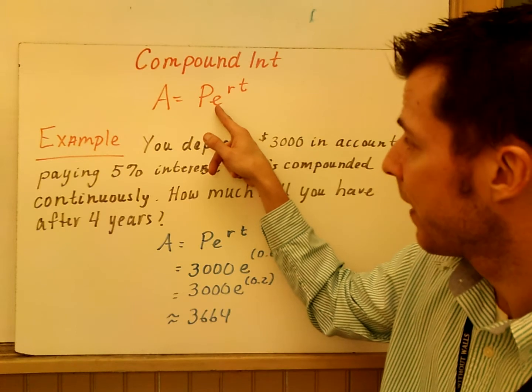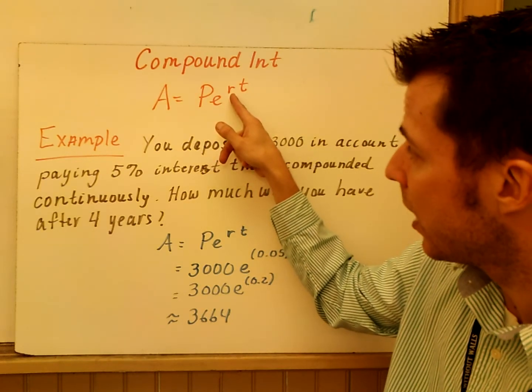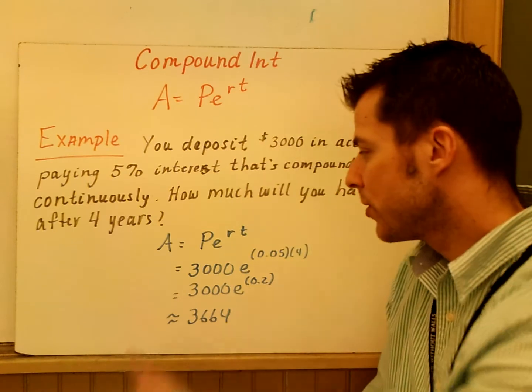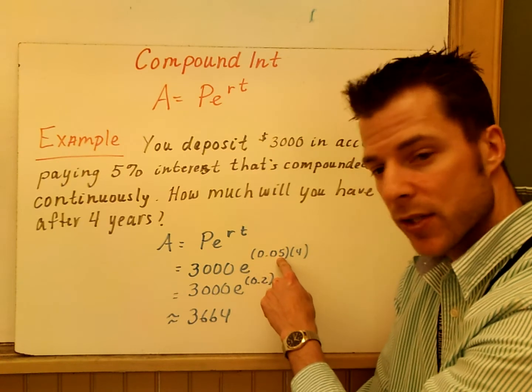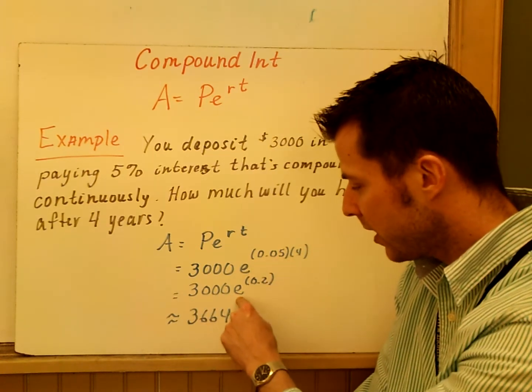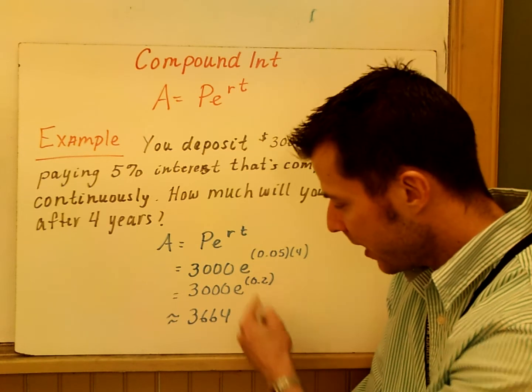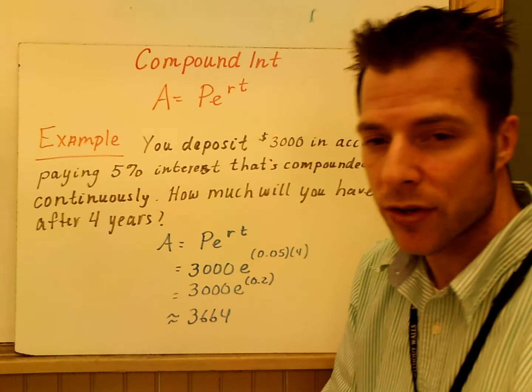R is the rate as a decimal, and T is time. So we just use this formula, 3,000E to the 0.05, your rate is a percent, times 4. So you get 3,000E to the 0.2. E to the 0.2 times 3,000 gives me 3,664.